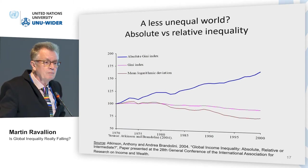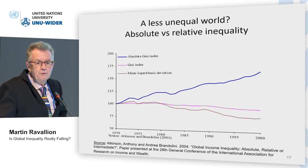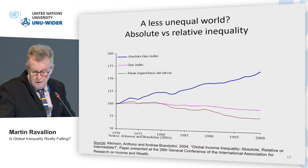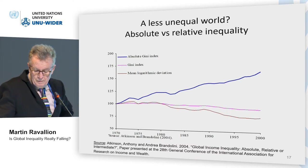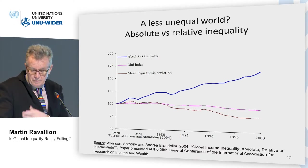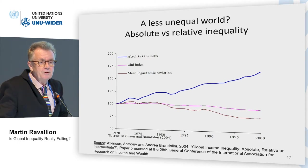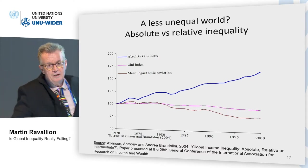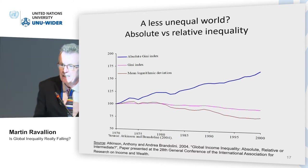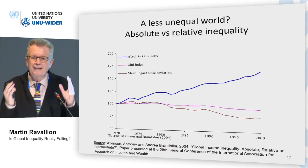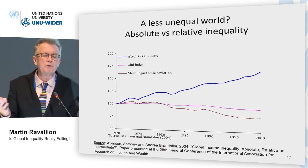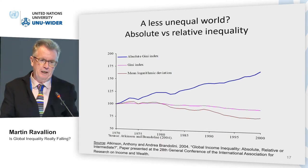If instead I use the Kombs absolute Gini index — here I've used numbers from Atkinson and Brandolini, and I've constructed similar and more recent numbers with the same pattern — the absolute Gini index is rising globally. Relaxing scale independence means measuring inequality by the absolute gaps between the rich and the poor, not the proportionate gaps.